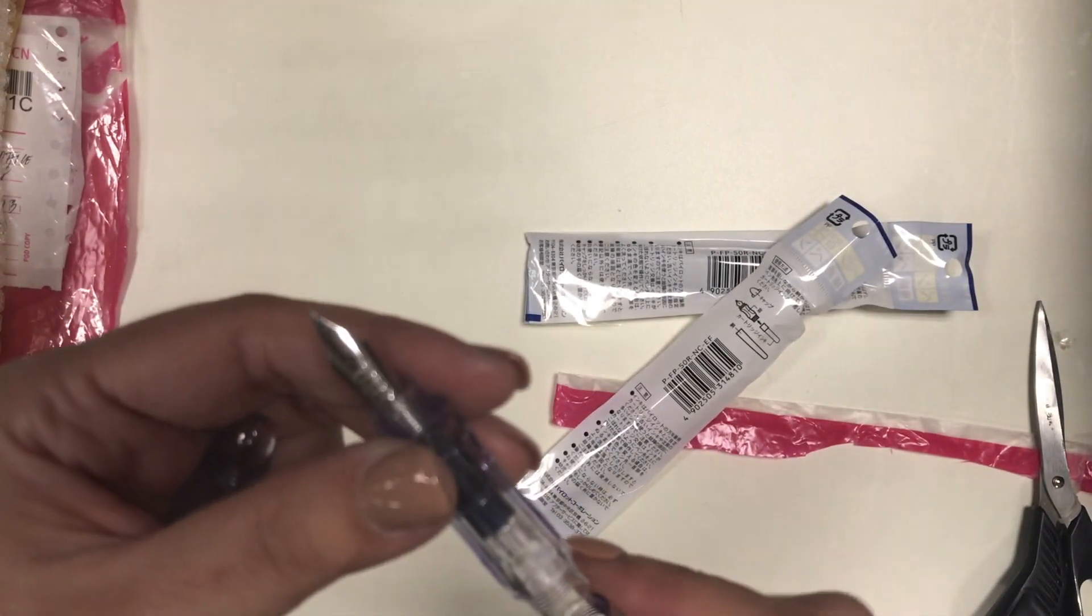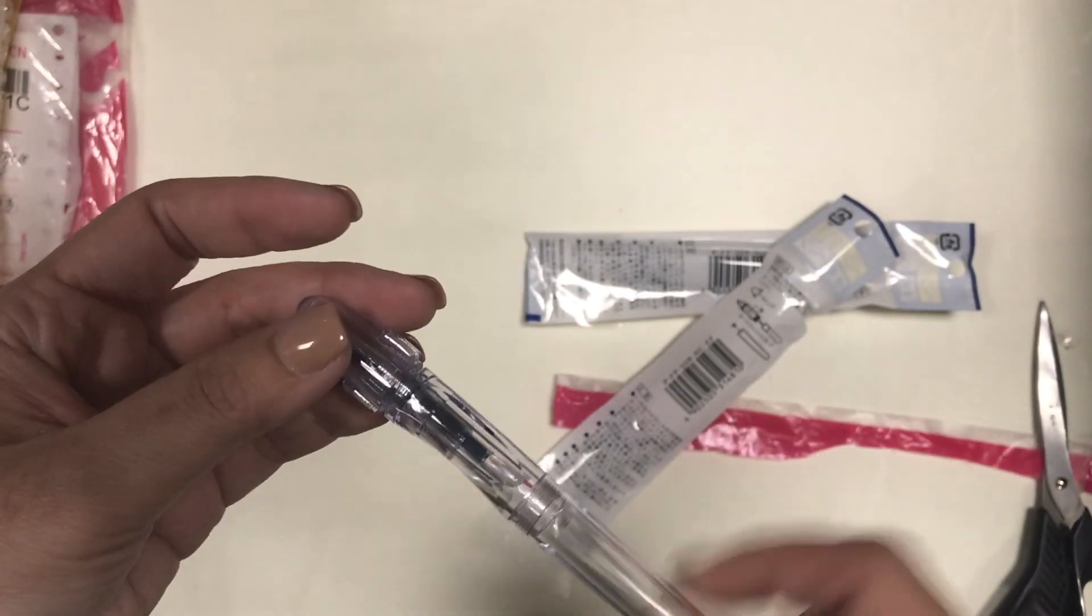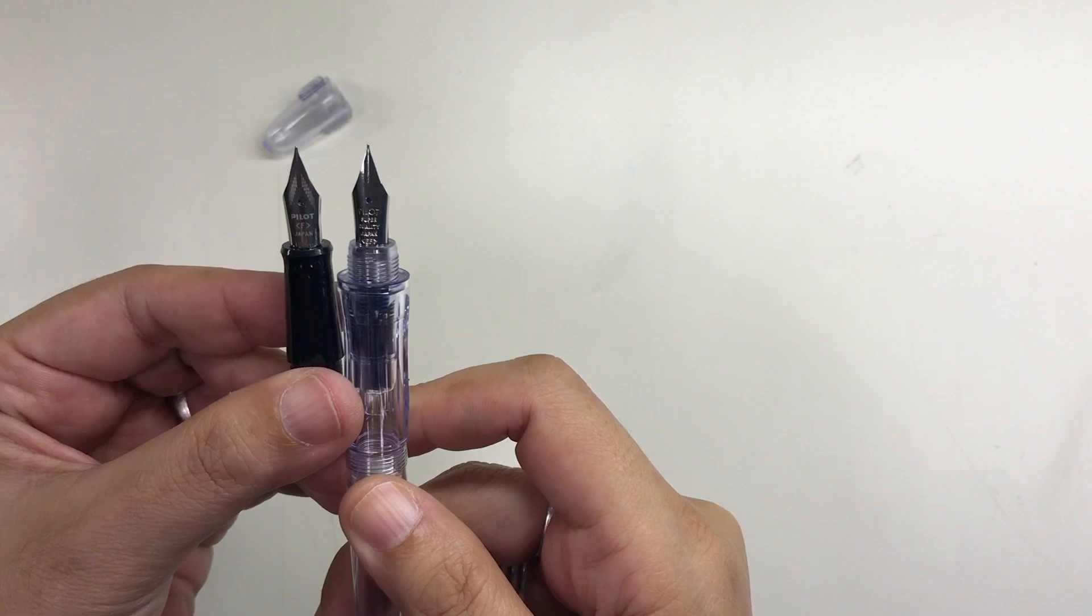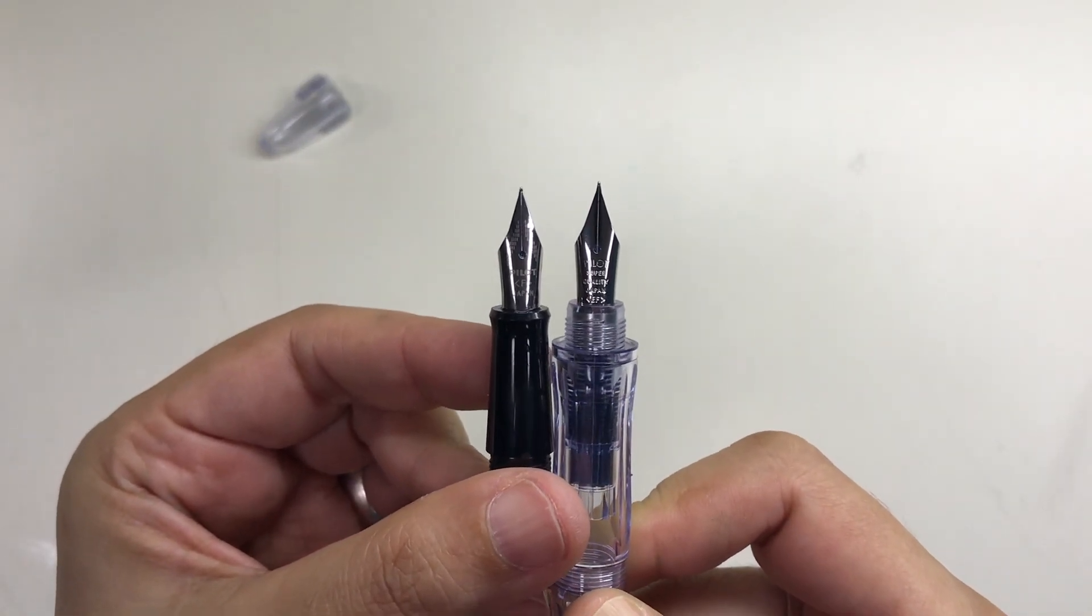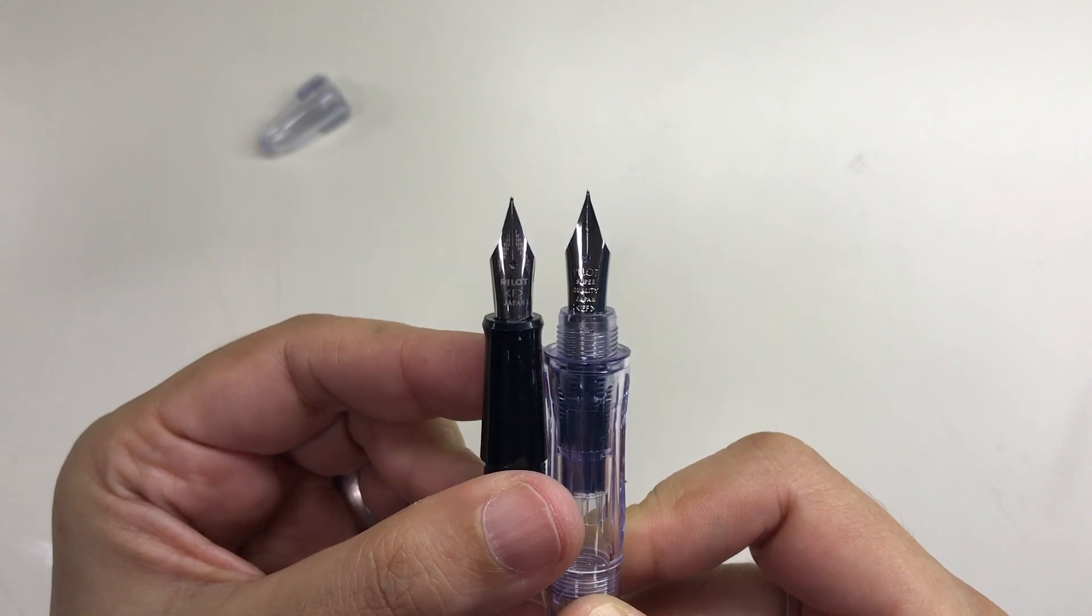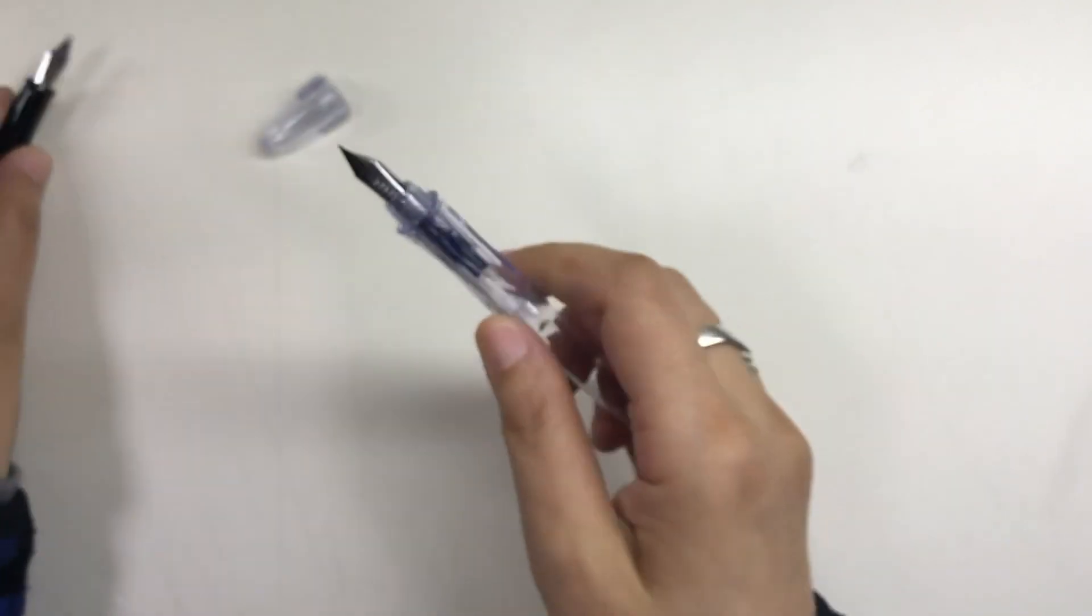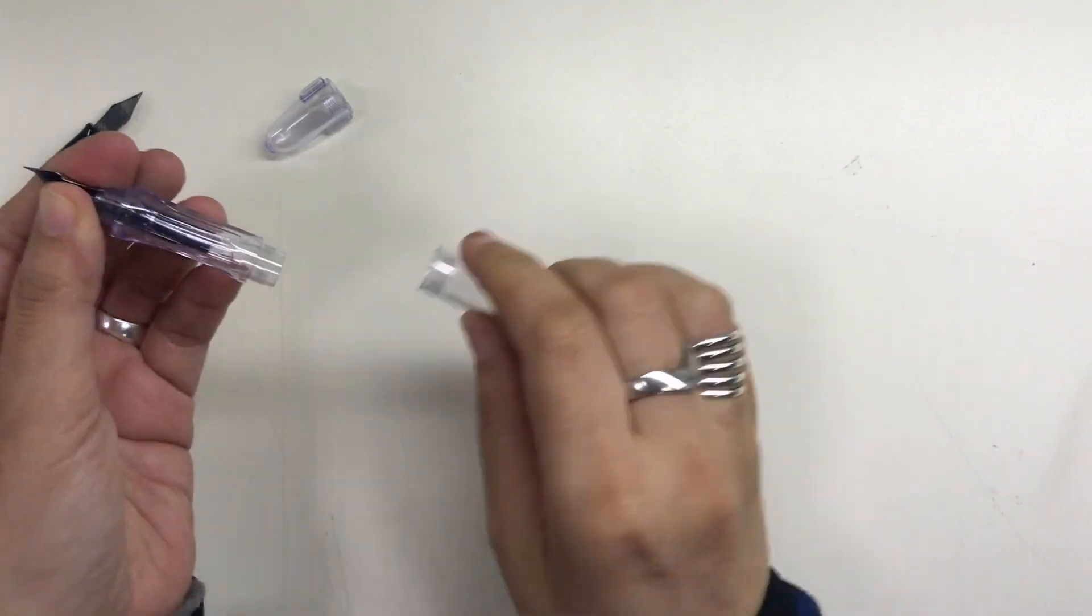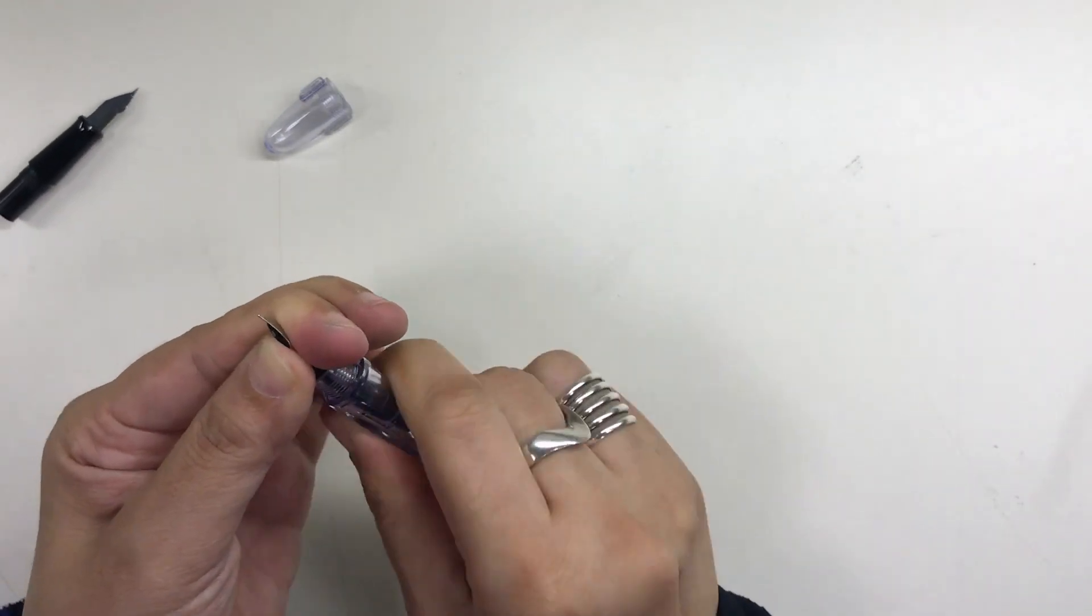So here is the Pilot Penmanship. It comes in this plastic packaging very similar to the packaging of the Pilot Coleto that I used to use. And here is the nib of the Pilot Metropolitan. As you can see they have different engravings. And what I did was that I just unscrewed the section from the barrel and then gripped the nib and feed firmly and then gave a little twist and pull, and then the nib and feed came right off.